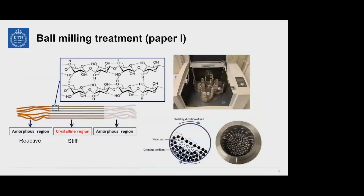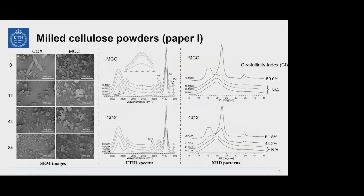Cellulose is a combination of amorphous and crystalline regions, and the ratio between them largely determines its properties. The crystalline region is stiff but less reactive, while the amorphous region is the opposite. In our study, this ratio is extremely important: we need sufficient crystalline region for reinforcing, and some amorphous region to react with MAPP. We used a ball mill to change that ratio, treating COX and MCC for one, four, and eight hours.